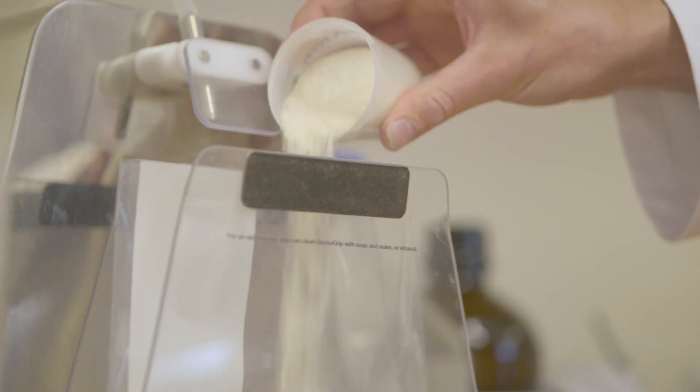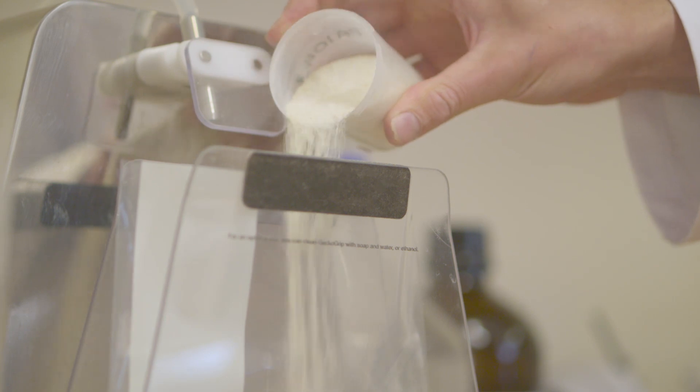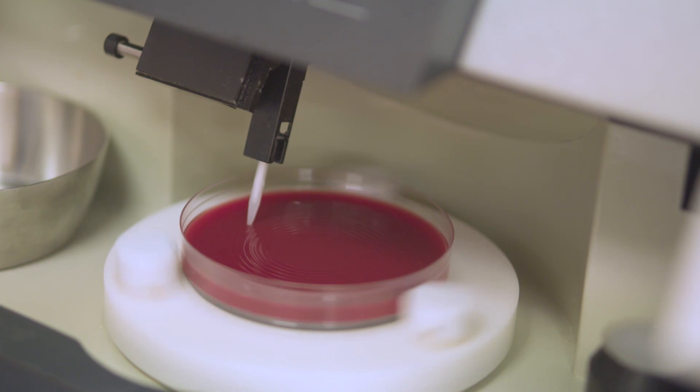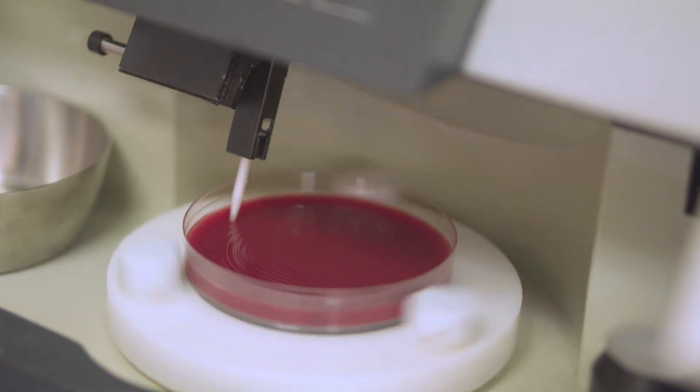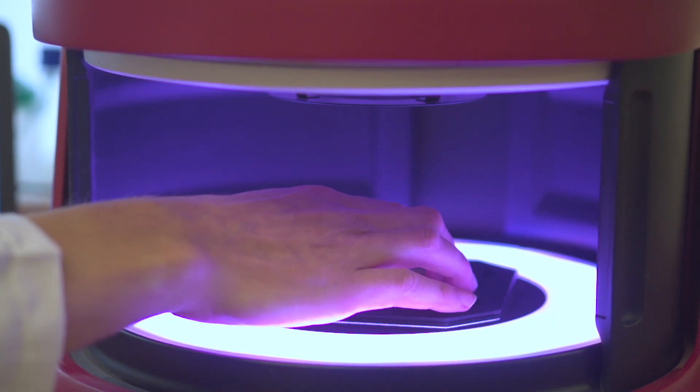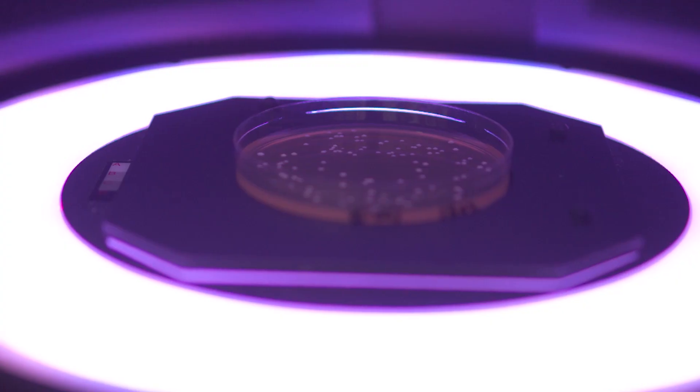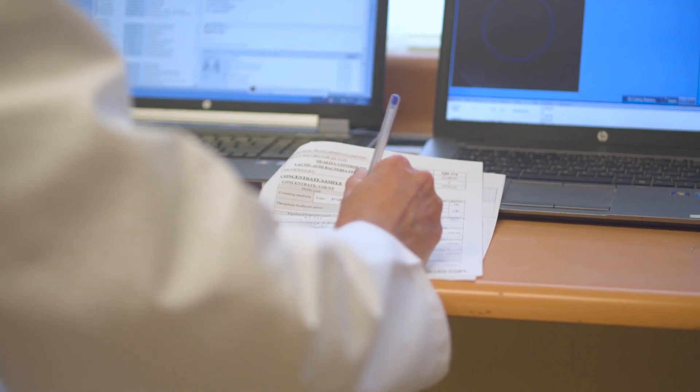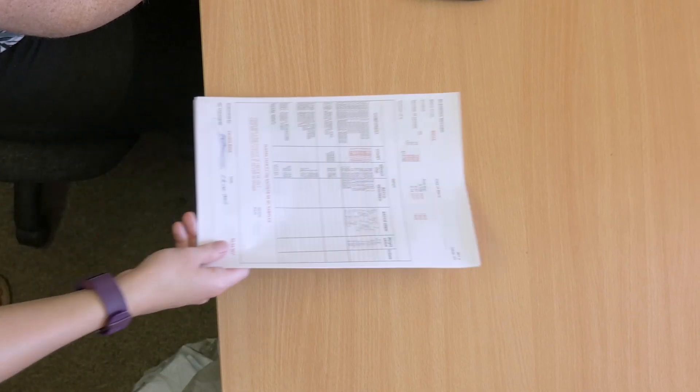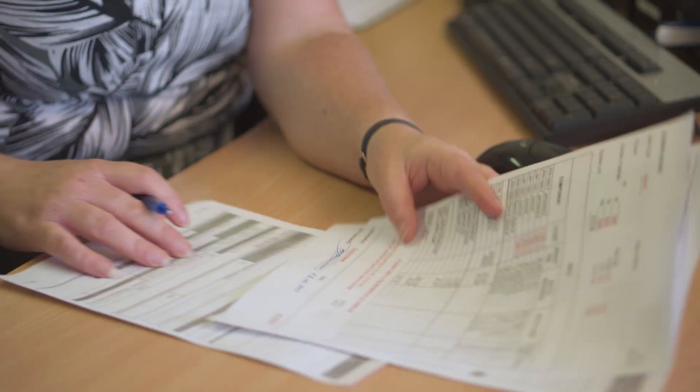Once filled, the sachets are classed as work in progress. This allows the final product to be rigorously quality control checked to ensure each bacterium and enzymes are at specification. We also check for dissolvability and flowability. Only after quality control has released each batch can the sachet be labeled and boxed, then quality control checked one final time before delivery to the customer.